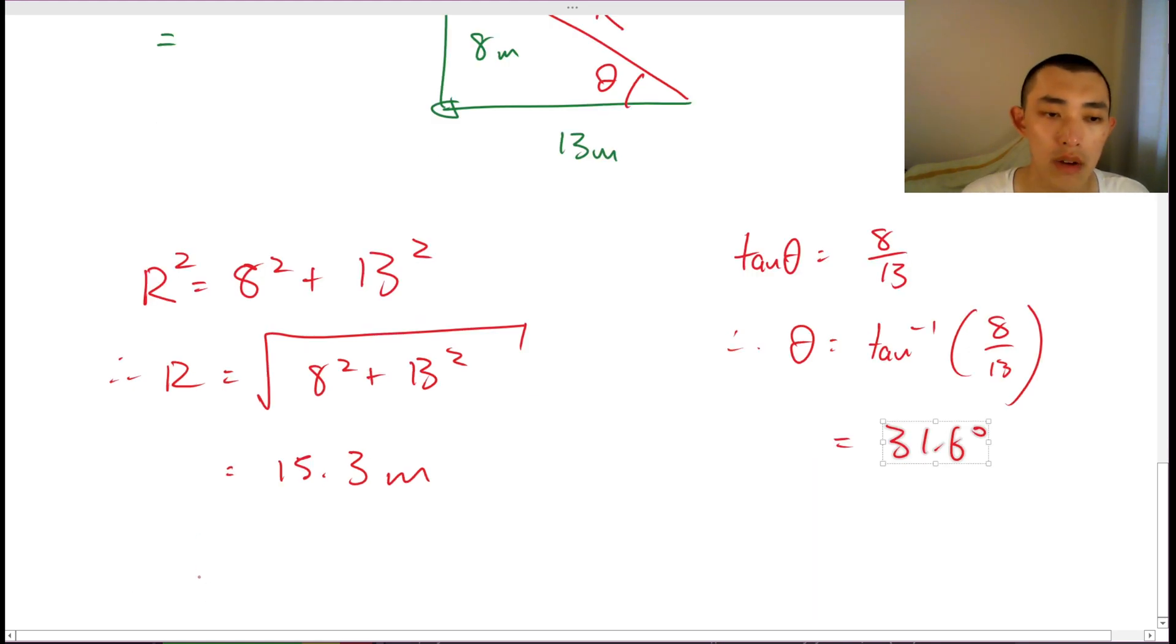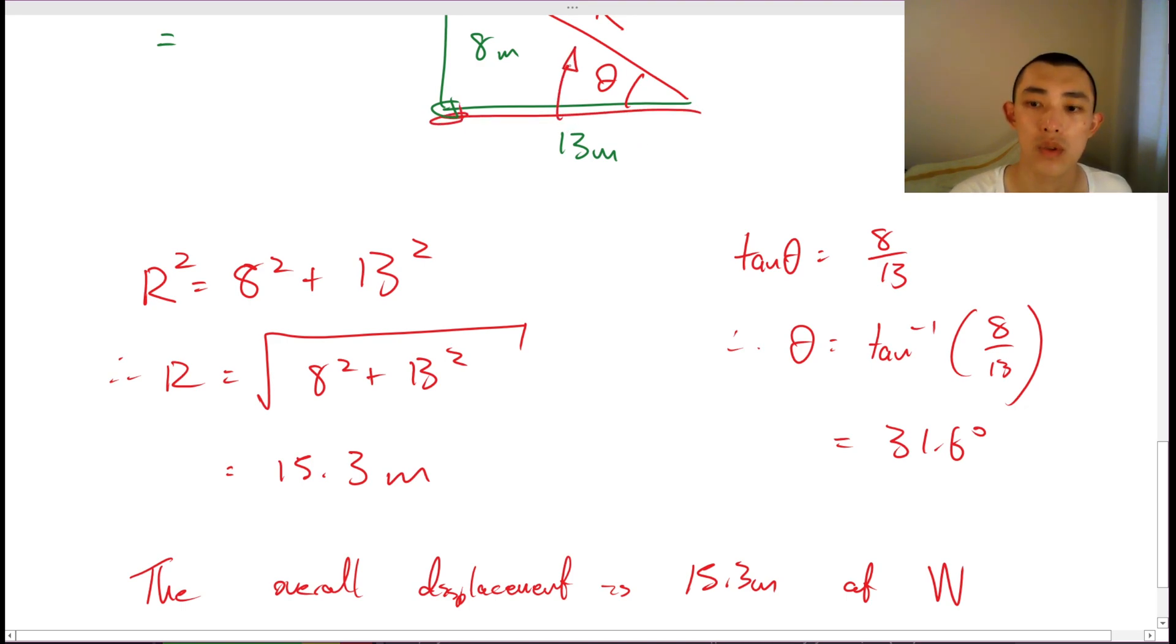So we can say that our resultant vector, we can say that this is east, west. So if we point west and then we go up towards the north, if we go 31.6 degrees upwards towards the north, or we can say 31.6 degrees above the horizontal again, that's fine as well.